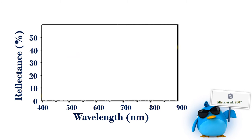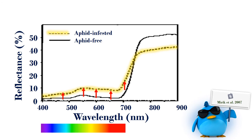This graph summarizes the expected effect of insects on plant reflectance. The y-axis is the plant reflectance across different wavelengths on the x-axis. Aphid-infested plants, shown as the yellow line on this graph, reflect more visible energy than aphid-free plants. Within the near-infrared spectral range, aphid-infested plants reflect less energy than aphid-free plants.